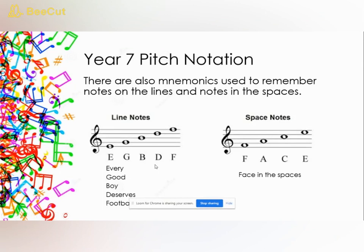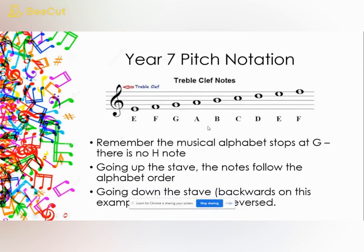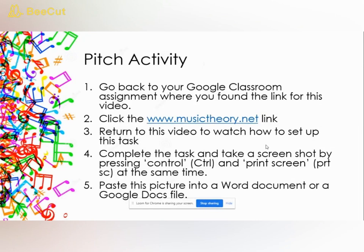If you're unsure, you may need to re-watch the video. Some people find it easy to work out from one note up the musical alphabet, while others prefer to learn the mnemonics — 'Every Good Boy Deserves Football' for the lines, and FACE for the spaces. So here's your task: in your Google Classroom assignment where this video was posted, you'll find a link to musictheory.net. Click that link, then pause this video and open up musictheory.net, and I'll show you what to do next.